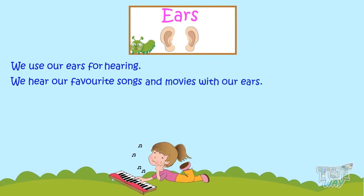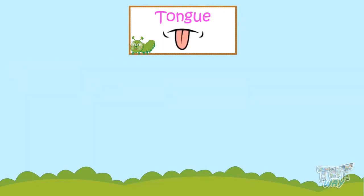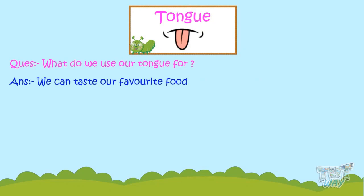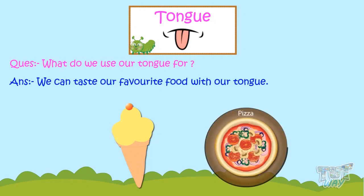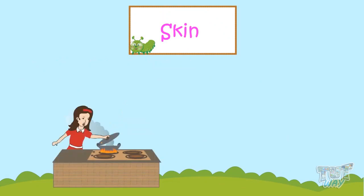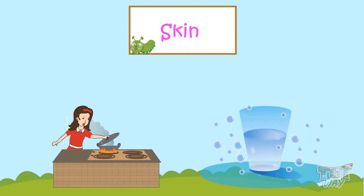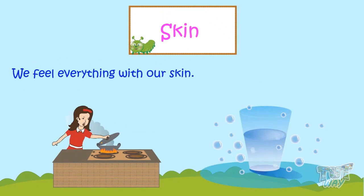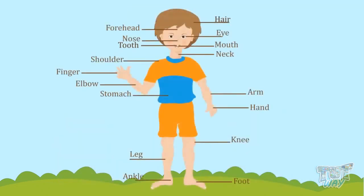We use our ears for hearing. We hear our favorite songs, poems, and movies with our ears. We use our tongue to taste our favorite food. This ice cream is yummy, this pizza is spicy — we taste with our tongue. We feel everything — hot, cold — with our skin.